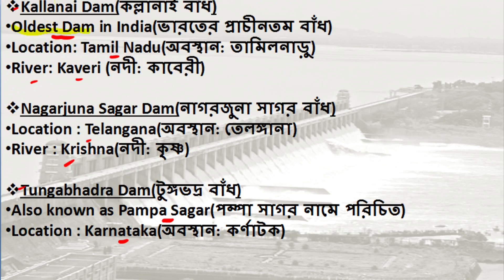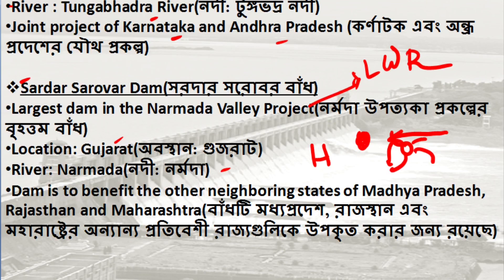Nagarjuna Sagar Dam is on the Krishna river. Tungabhadra Dam is in Pampa Sagar, and its location is in Karnataka. Sardar Sarovar Dam is part of the Narmada Valley Project, along with Tungabhadra Dam.